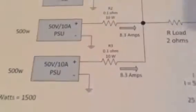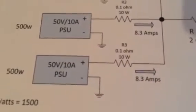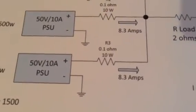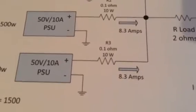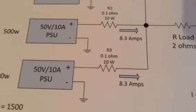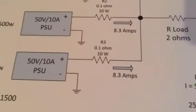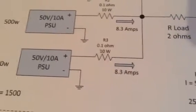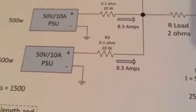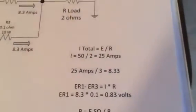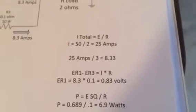If I zoom in on just one of the power supplies, you can see I'm using a 0.1 ohm, 10 watt. If you do the Ohm's Law calculations, you're going to find that each branch is actually producing about 8.3 amps. So let's just do some Ohm's Law here.